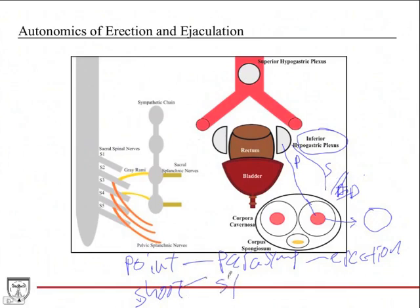So you have shoot, sympathetic, giving you ejaculation. So it's a coordination of both the parasympathetic and sympathetic nervous system.